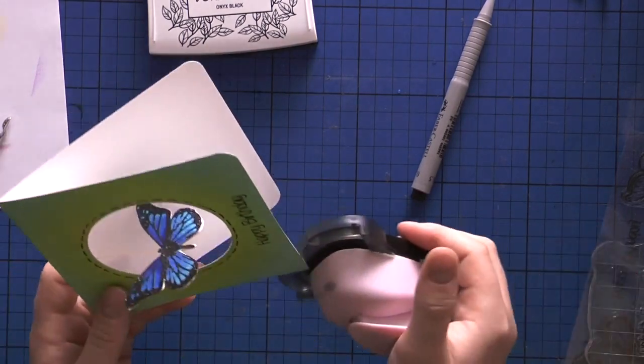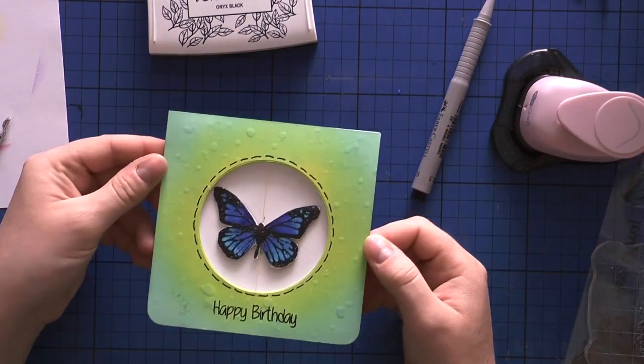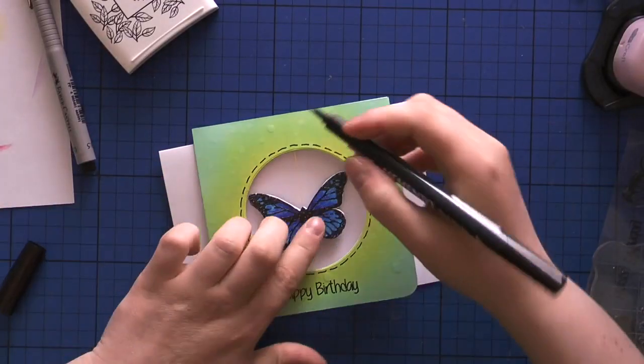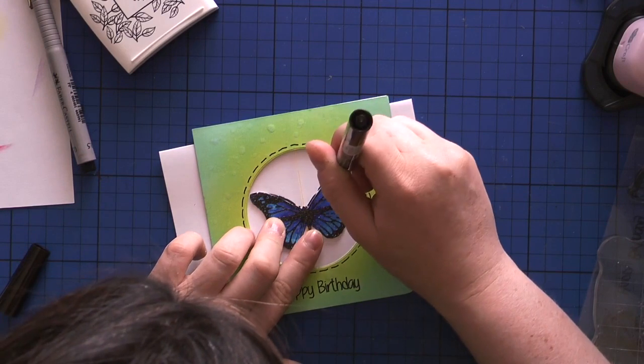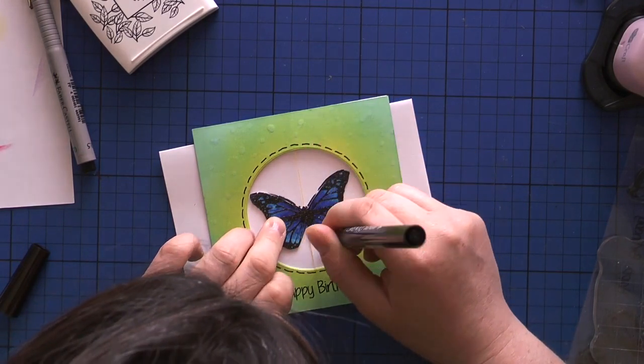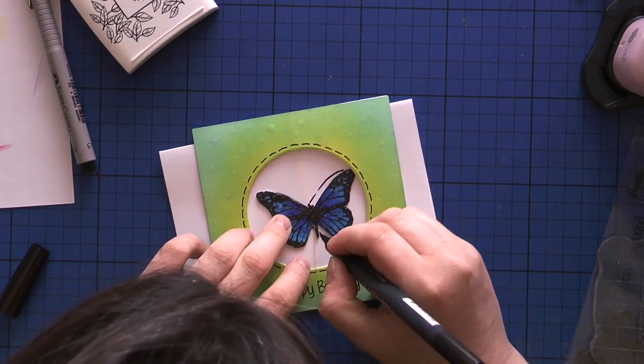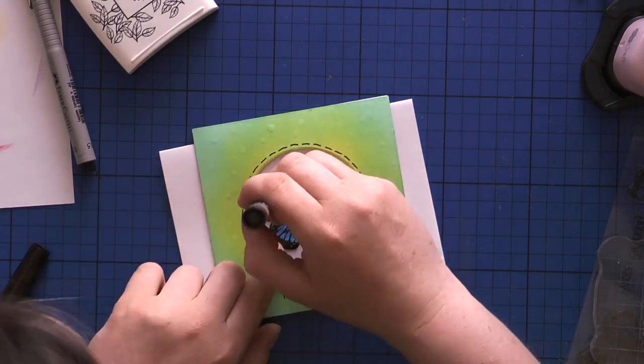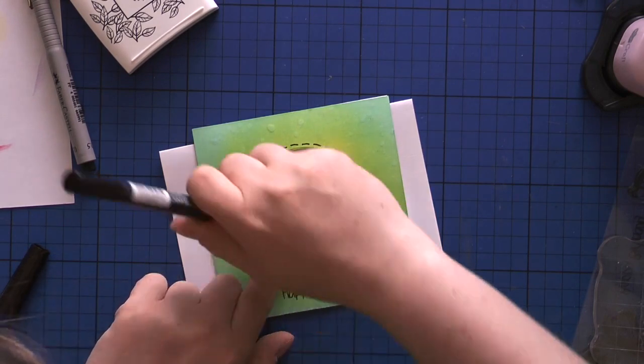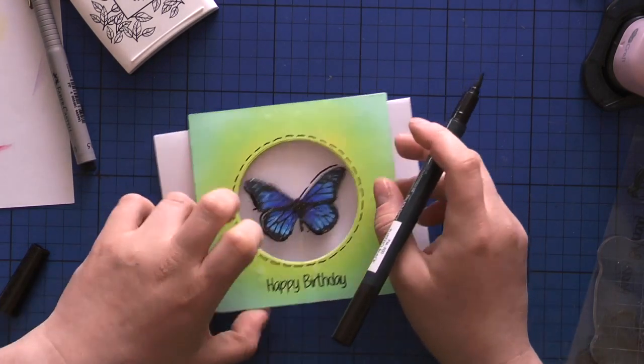Then to cover up that blue spot from my butterfly, I used some yellow cardstock to put on the inner side of my card. Here, just like I said before, I'm using some Memento Tuxedo Black pen to cover up the white parts of my butterfly after I adhered both front and back together.